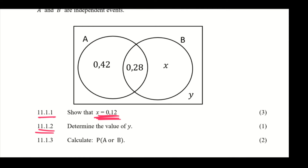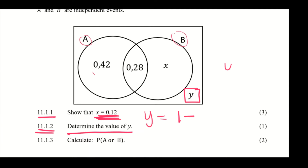For question 11.1.2, we are asked to find the value of Y. Y is the region that is not A and not B — it is not part of either event. To find Y, we use the complement: Y equals 1 minus P(A union B).